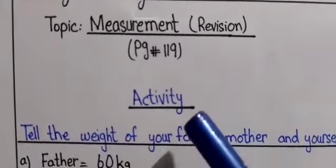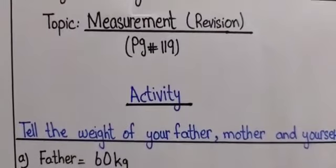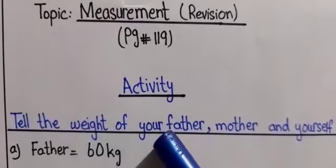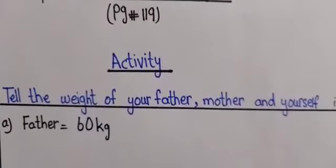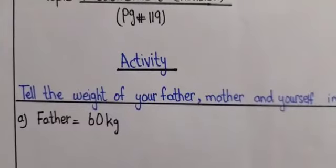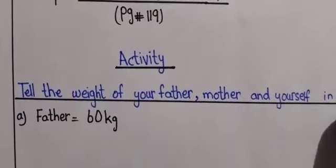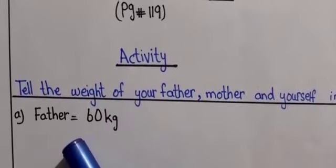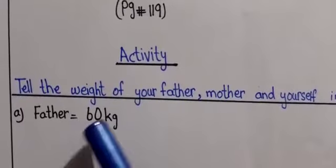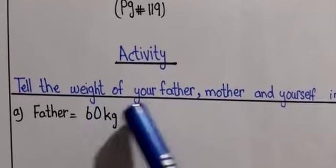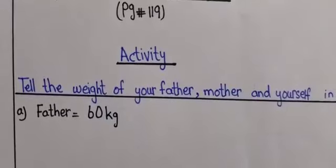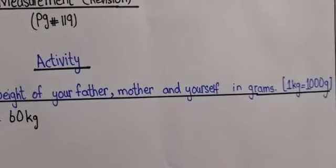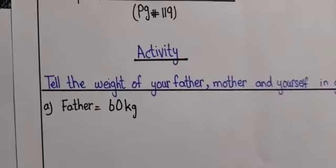We have to do the activity because we are starting a new topic for revision — that is mass. You all remember you have done an activity telling the weight of your father, mother, and yourself. Now, taking that activity forward: you all told me the weight in kilograms. For example, someone said his father's weight is 60 kilograms. Now what we have to do in the activity is tell the weight of your father, mother, and yourself in grams. Remember, one kilogram has one thousand grams.